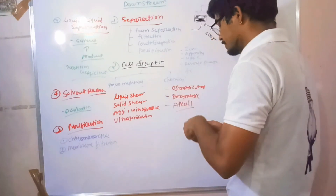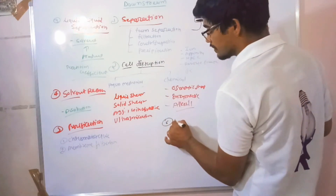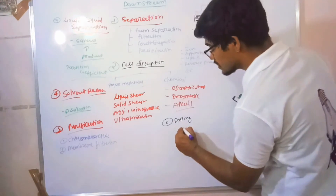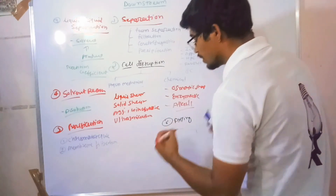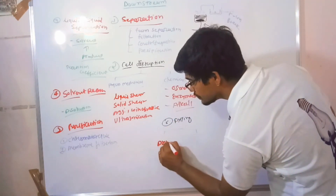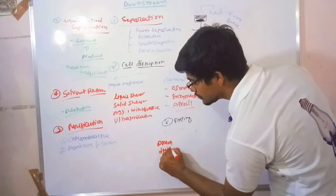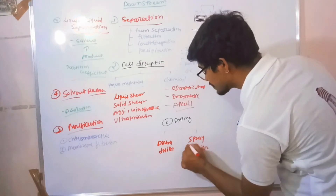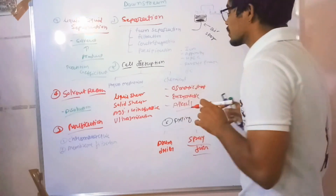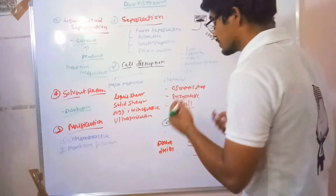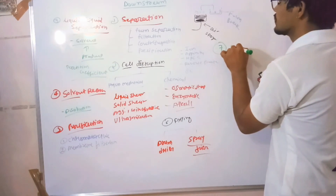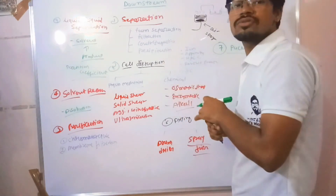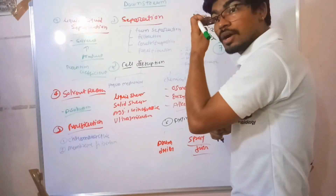After purification is done, the next step — the sixth step — is drying. Drying is done by two systems: a drum dryer and a spray dryer. Spray dryer is mostly used for heat-labile products. After drying, the next step is packaging. This covers all about the downstream processes; the capital cost is higher in downstream processes.